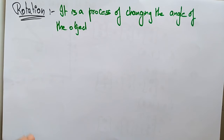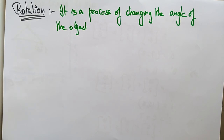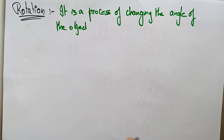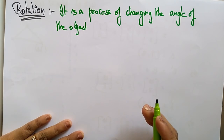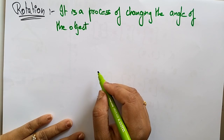For example, suppose you are sitting straight — you are at 90 degrees. If you want to move to the right side or to the left side, you have to rotate, changing the object. You are just rotating 90 degrees or rotating 270 degrees like that. So that is rotation — a process of changing the angle of an object.